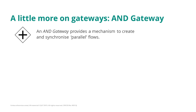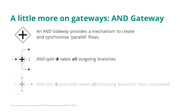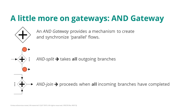The AND gateway can be used both as a split and as a join. In the case of a split, we take all outgoing branches. So in terms of token semantics, as soon as we receive a token in the input branch of this AND gateway, then two outgoing branches can be taken in parallel.